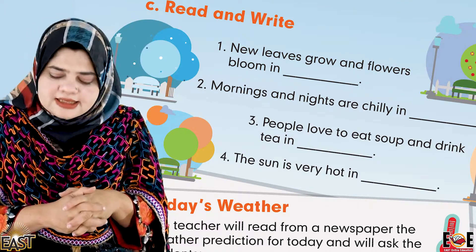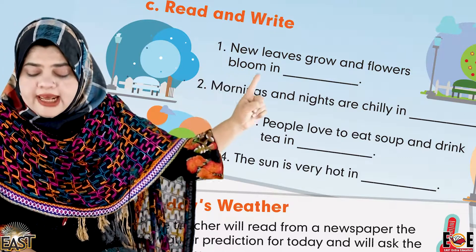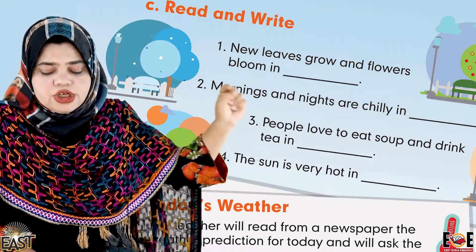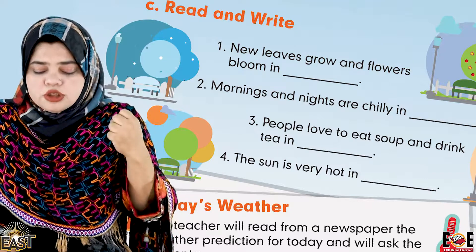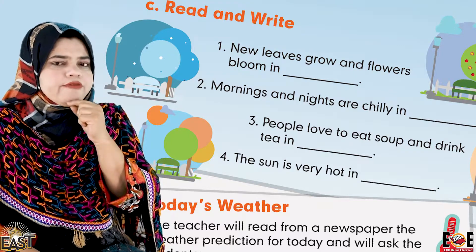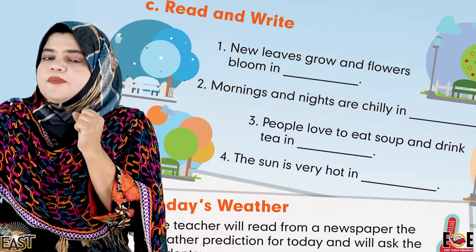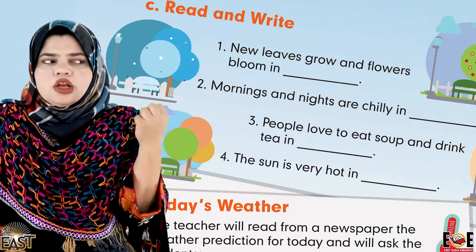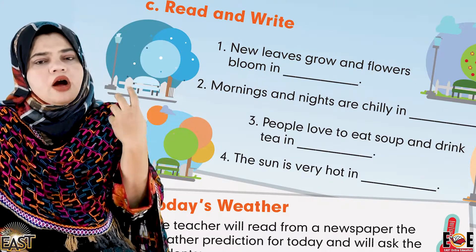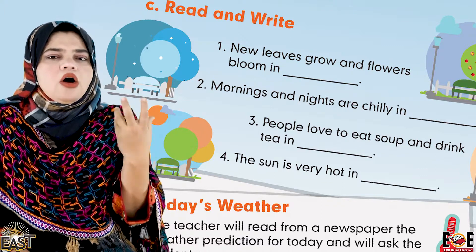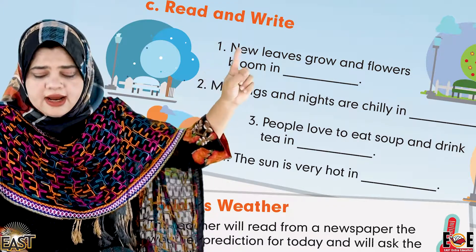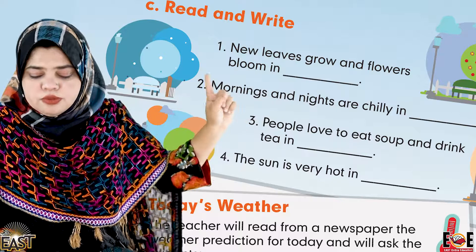Milke pahle dekhte hain kya bhai, sentences kya hain. 'New leaves grow and flowers bloom in ___ season.' Kis season ki baat ho rahi hai? Aapko pahchanna hai, identify karna hai ke bhai kaunsa season hai jab naye leaves grow karte hain, naye patte aate hain, aur flowers aate hain, phool khilte hain. Kaunsa season hota hai? Woh spring season! Very good! New leaves grow and flowers bloom in spring season.